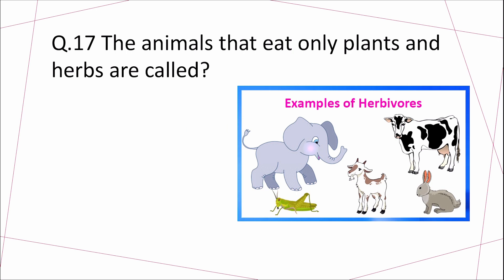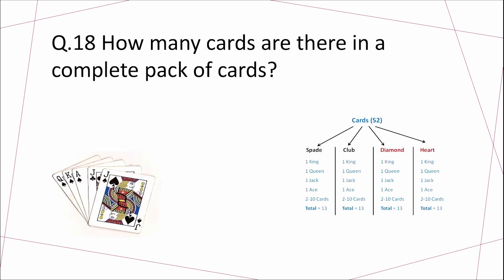Question 17: The animals that eat only plants and herbs are called? Answer: Herbivores. Examples of herbivores are elephants, cows, goats, grasshoppers, and rabbits. Question 18: How many cards are there in a complete pack of cards?